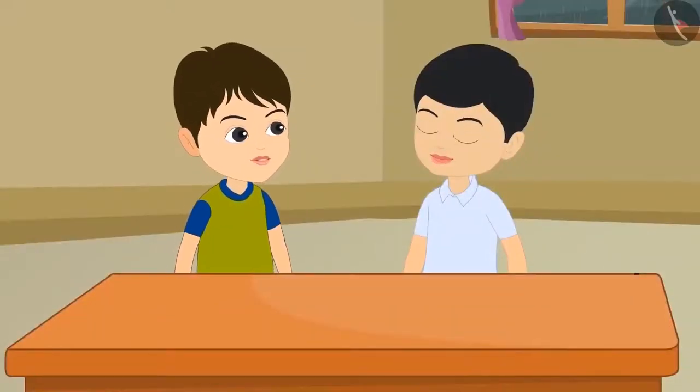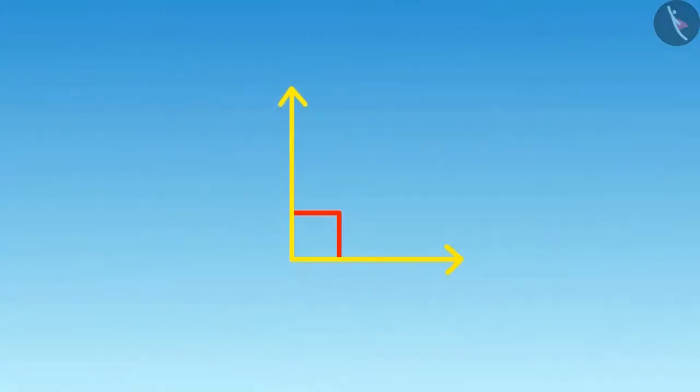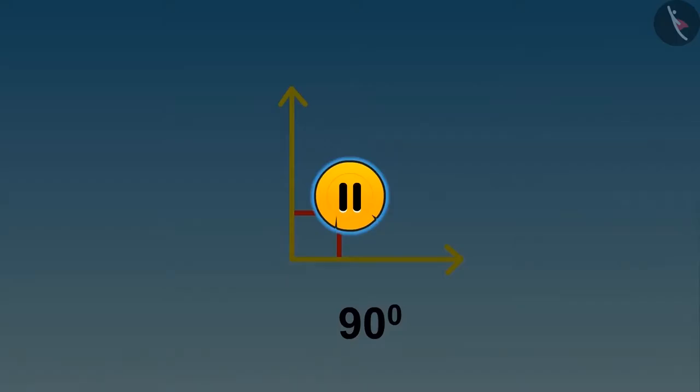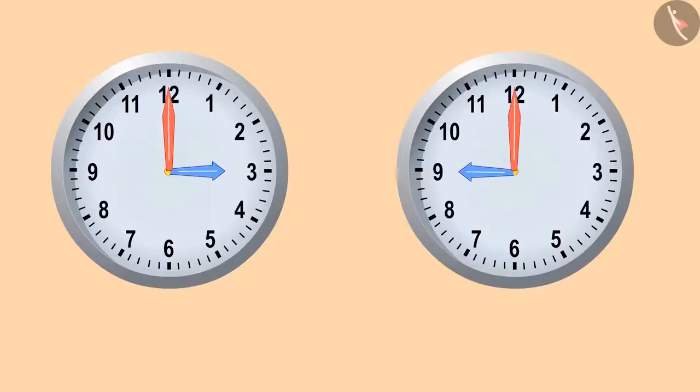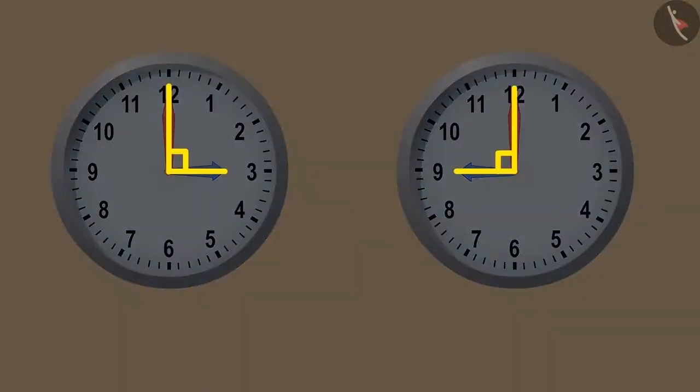Now can you tell me at what all times the angle of 90 degrees is formed in the clock? You can pause the video here if you want and think about it. In my opinion, right angle is made when it is 3 o'clock and 9 o'clock.